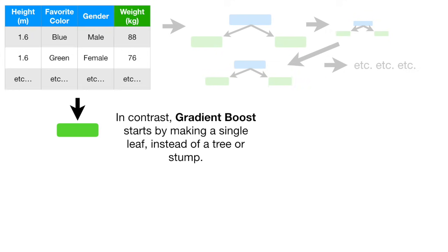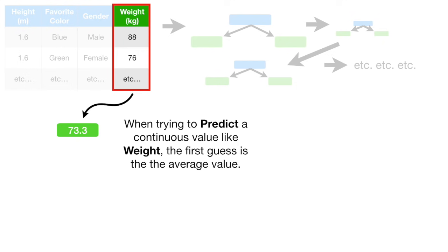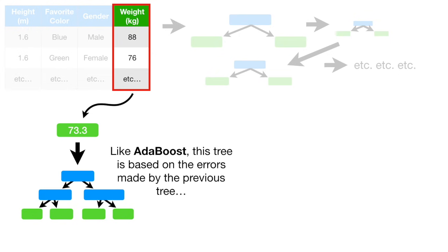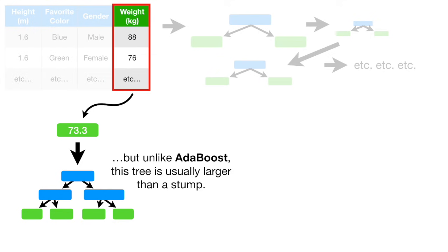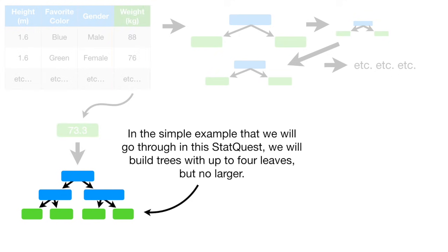In contrast, Gradient Boost starts by making a single leaf instead of a tree or stump. This leaf represents an initial guess for the weights for all of the samples. When trying to predict a continuous value like weight, the first guess is the average value. Then Gradient Boost builds a tree. Like Adaboost, this tree is based on the errors made by the previous tree. But unlike Adaboost, this tree is usually larger than a stump. Gradient Boost still restricts the size of the tree — in this example we will build trees with up to 4 leaves, but no larger.